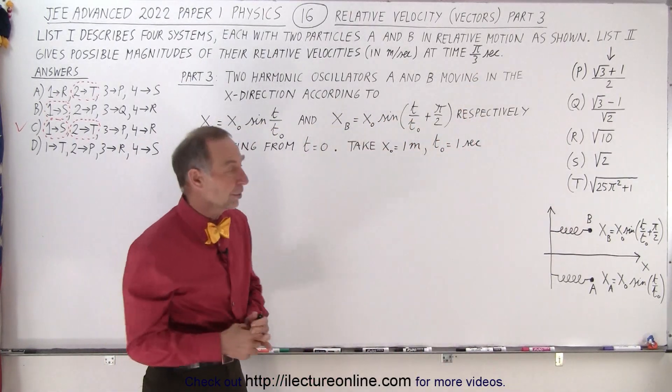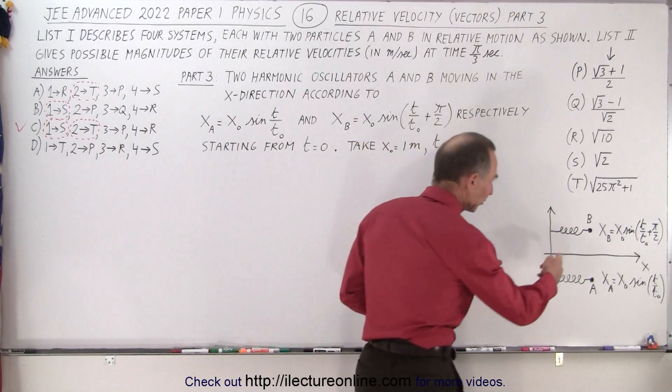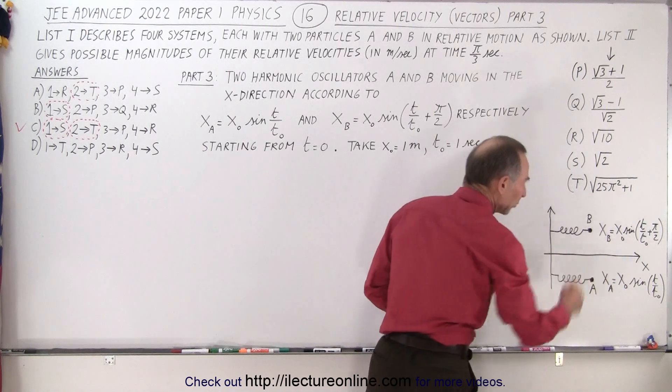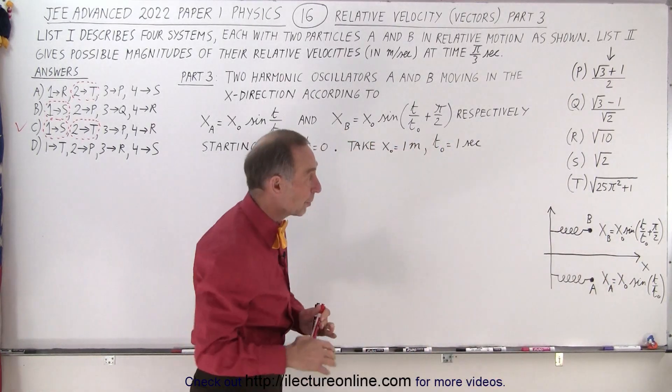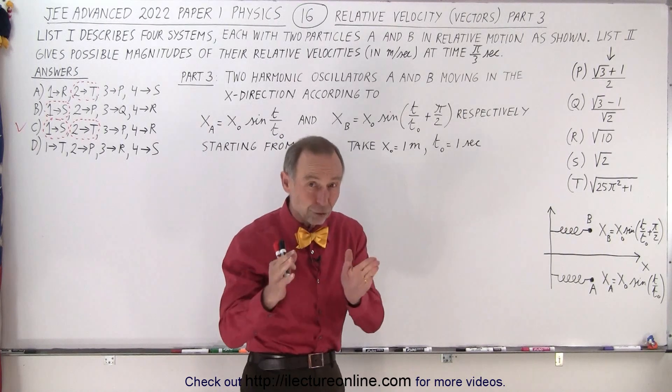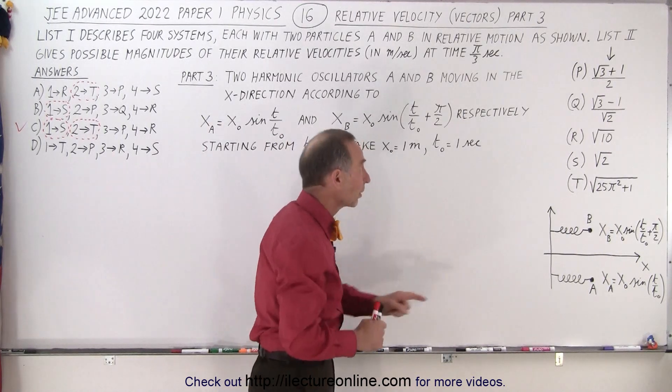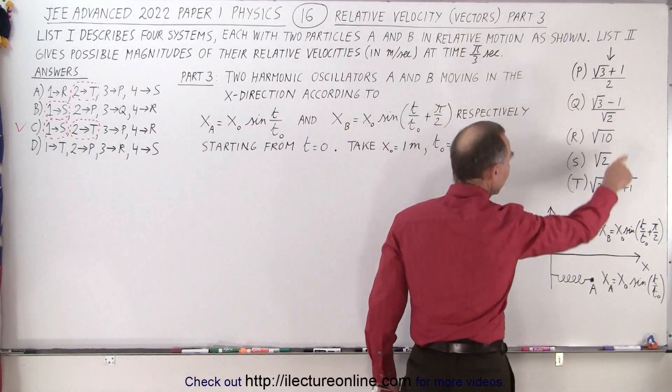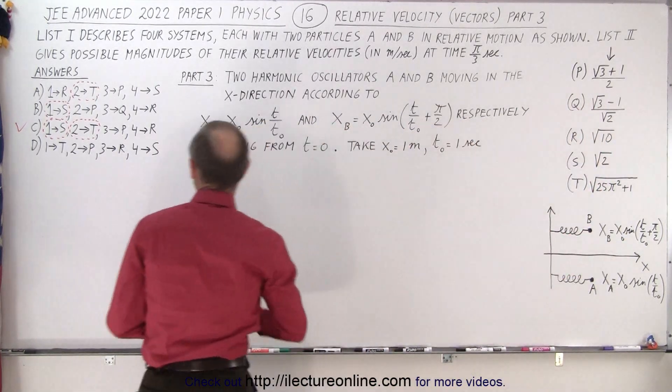In the third part, we're dealing with two oscillators, oscillator B and oscillator A, and the position of the oscillators is defined by those two equations. Now remember, we're supposed to find the relative velocity, the magnitude of the relative velocity between the two particles at that moment in time, and we should then match it up with one of these answers.